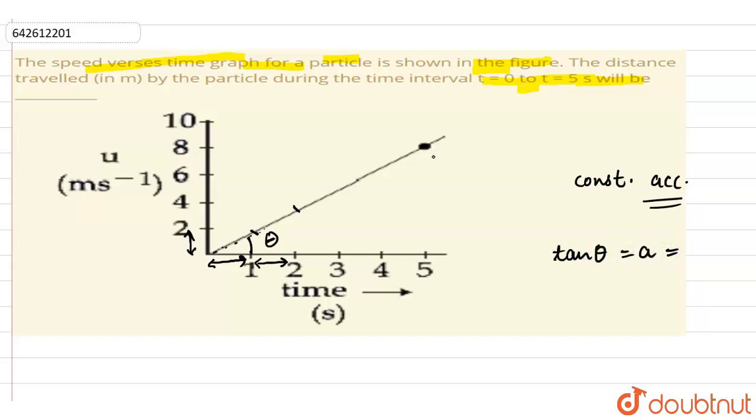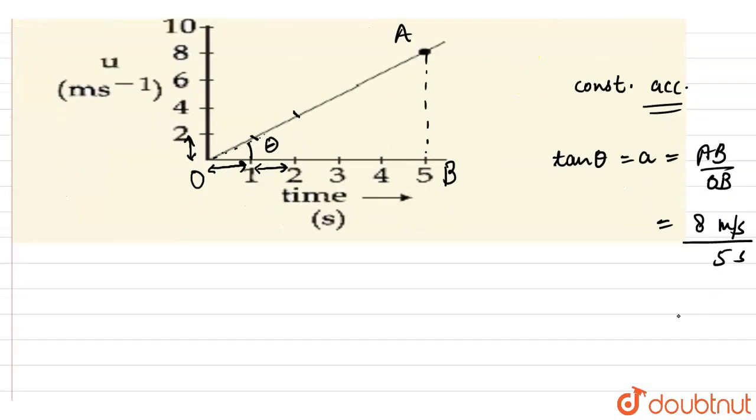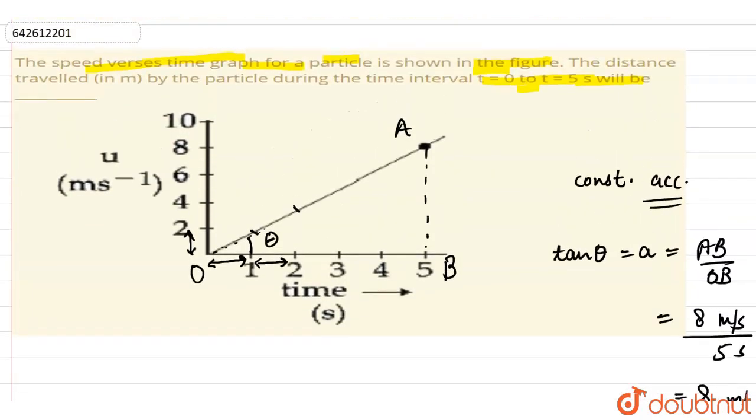This is equal to, let's just say this is our triangle OAB, tan theta is equal to AB divided by OB. AB is 8 meter per second and OB is 5 second. So this comes out to be 8 divided by 5 meter per second square. This is our acceleration.